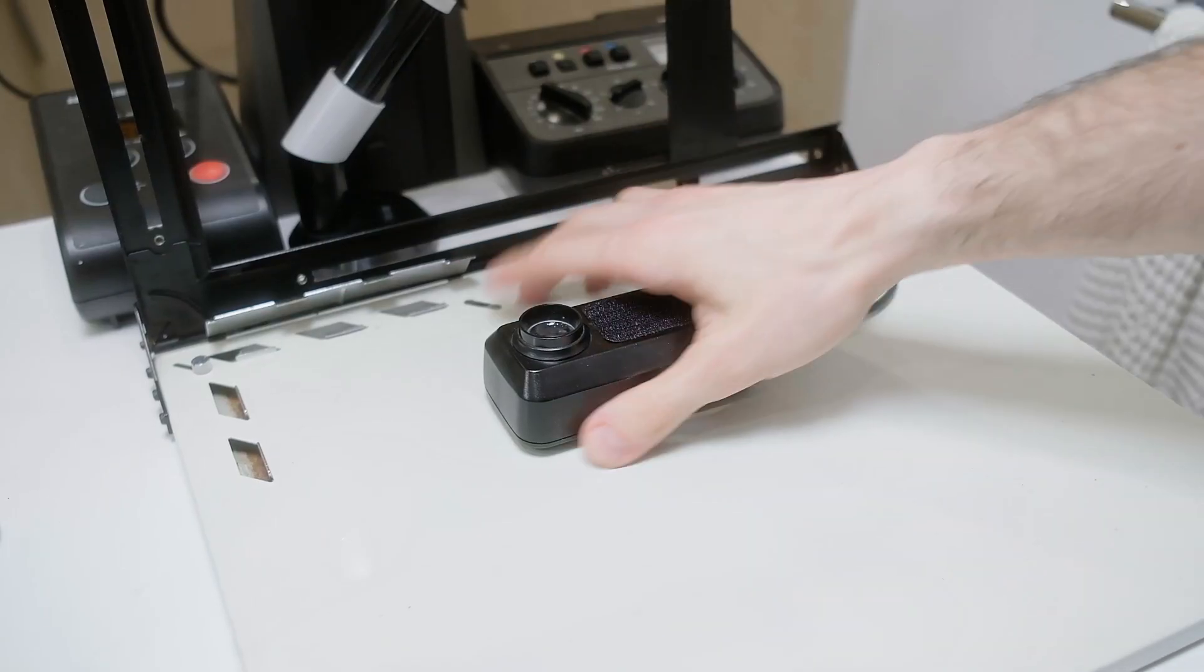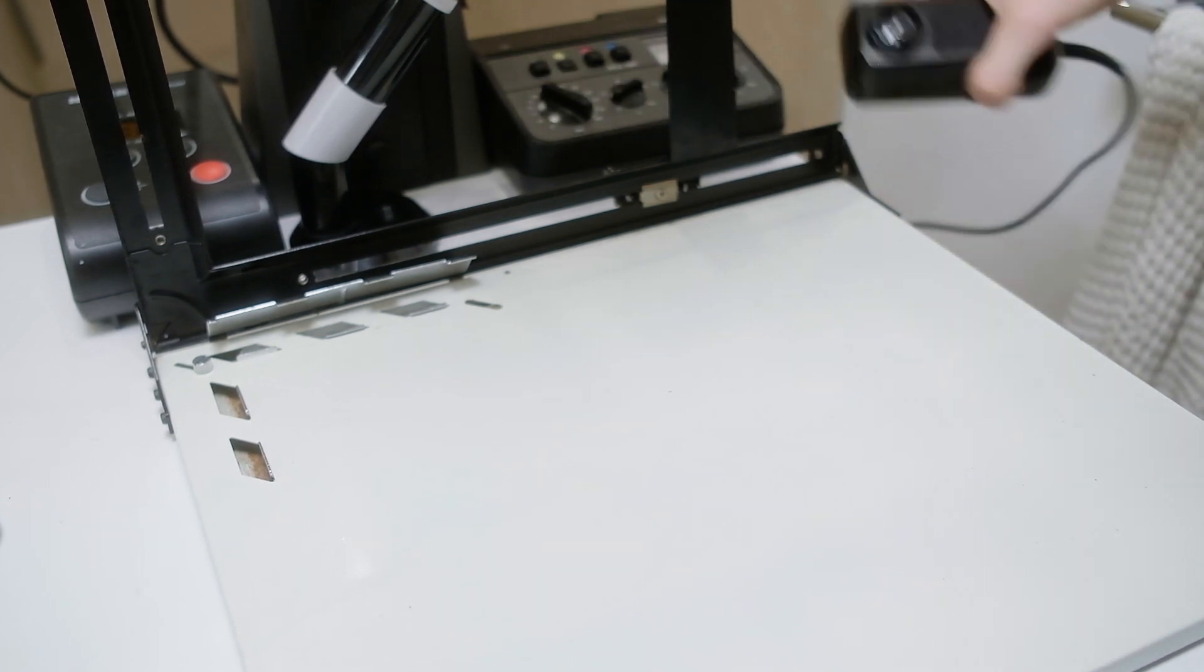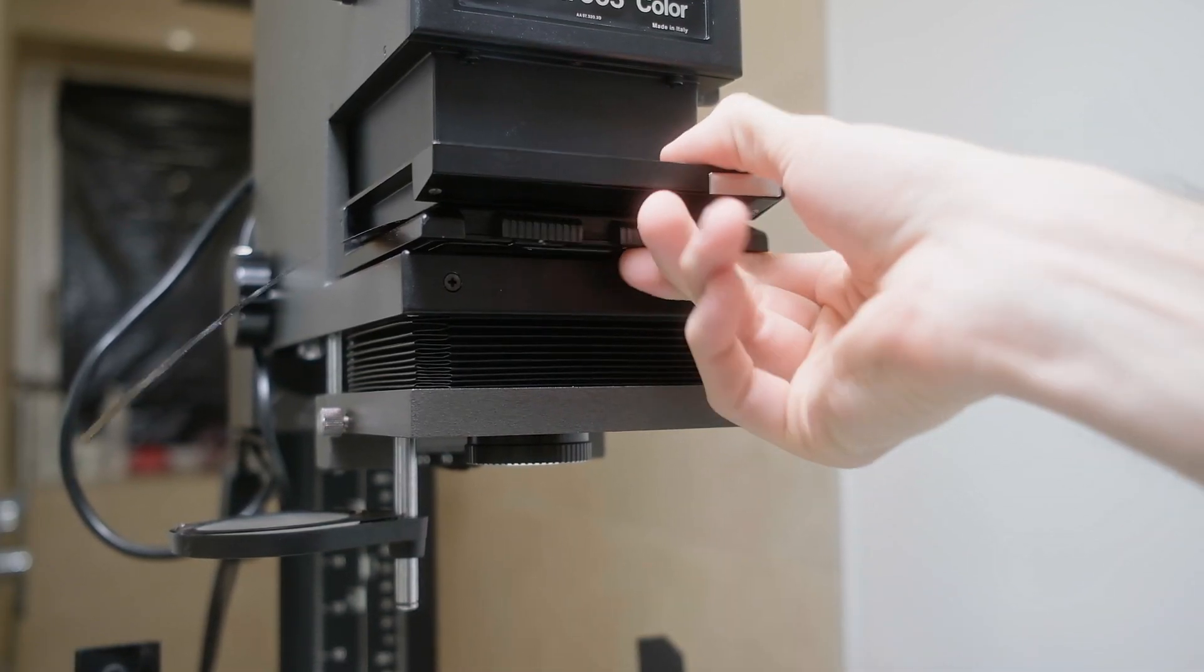When everything is calibrated we can actually transfer the settings for the next negative. It means you can recalculate the exposure for your negative for different magnifications and you also can make color corrections and at least find the middle point.